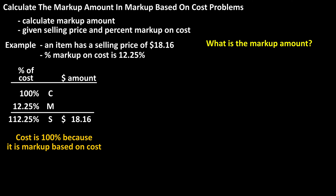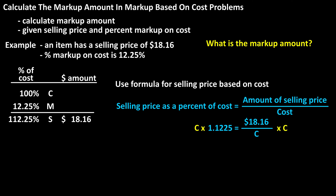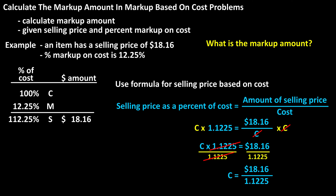To find the markup amount, we first need to find the cost amount. Since we know the selling price, $18.16, and the percent selling price on cost, 112.25%, we can use the formula: percent selling price based on cost equals selling price amount divided by the cost amount. So we have 1.1225 equals $18.16 over the cost amount. We multiply both sides by cost, then divide both sides by 1.1225, and we get cost equals $18.16 divided by 1.1225, which calculates to $16.18 rounded off. We can put that in the table.